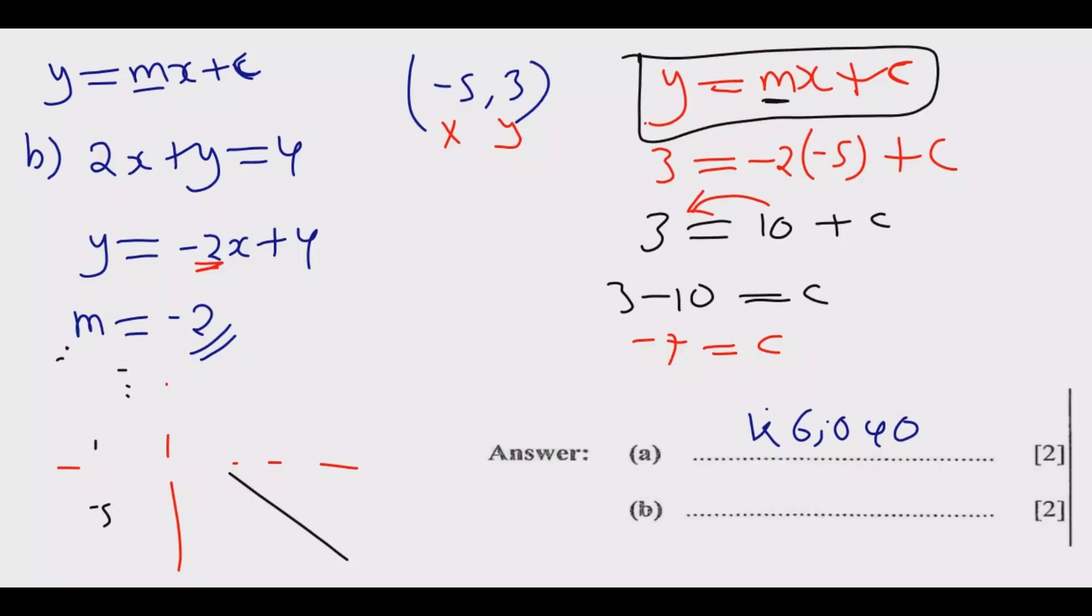We know what m is and we know what the value of c is. So the equation becomes y = -2x - 7. This is the equation we're looking for. Once you do that, you get these two marks.